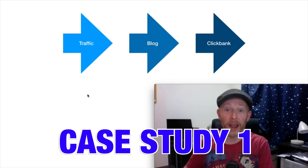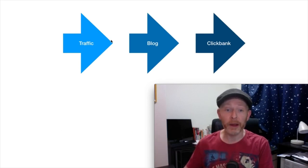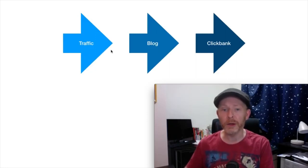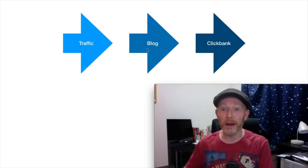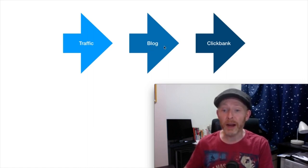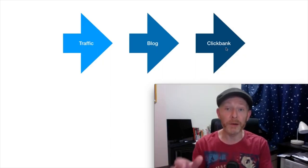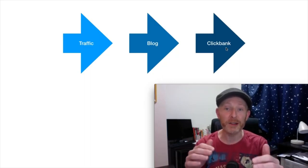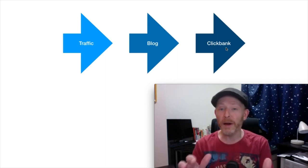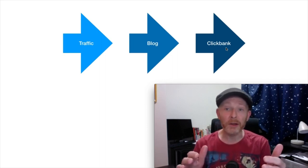Here's what we're going to do. We're going to start by getting some traffic and we're going to filter that traffic through to our blog. We're going to set the blog up in such a way that when people arrive, what they're going to want to do is click through straight away to the ClickBank product that we are promoting. By doing this, we're going to maximize the chances we have of making some commissions. I'm going to walk you through the high level process of what we're going to do.